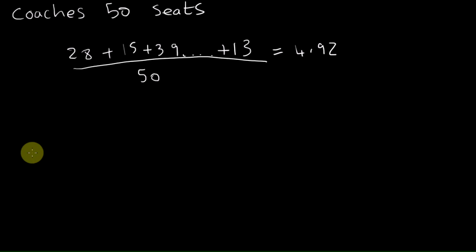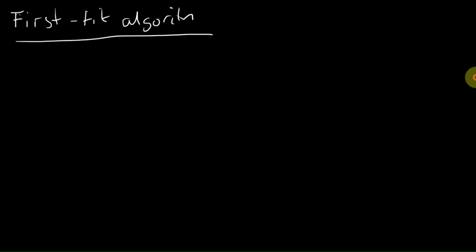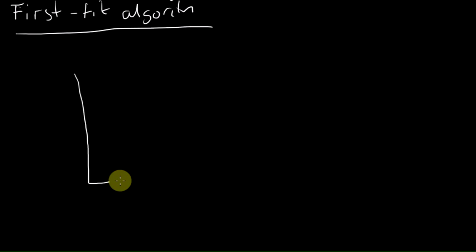So let's just get on with it and see what we can do. The first method, there's three methods of doing this, and the first one is called the first-fit algorithm. We're going to do this simply by doing one of these charts. So you've got one, these are the coaches, and we know that we need a minimum of five. We may need more but we'll leave it as five for now. There are 50 seats per coach. This is the scale of the number of seats and this is the number of coaches.